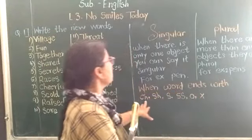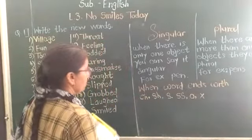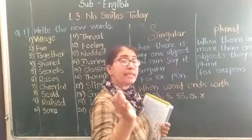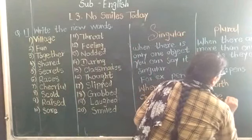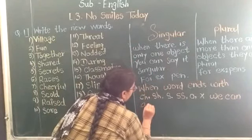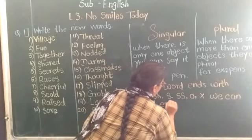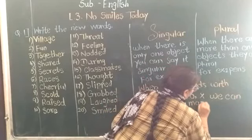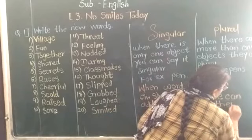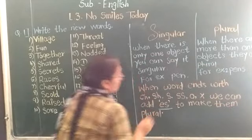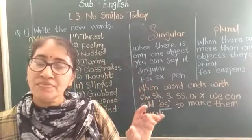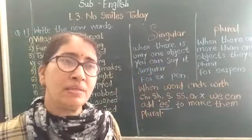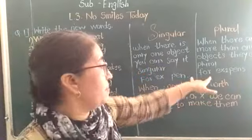Generally, we add S to make a noun plural. For example, bag becomes bags, fan becomes fans, pain becomes pains. But when the noun ends with CH, SH, SS, O, or X, there are specific rules to follow.